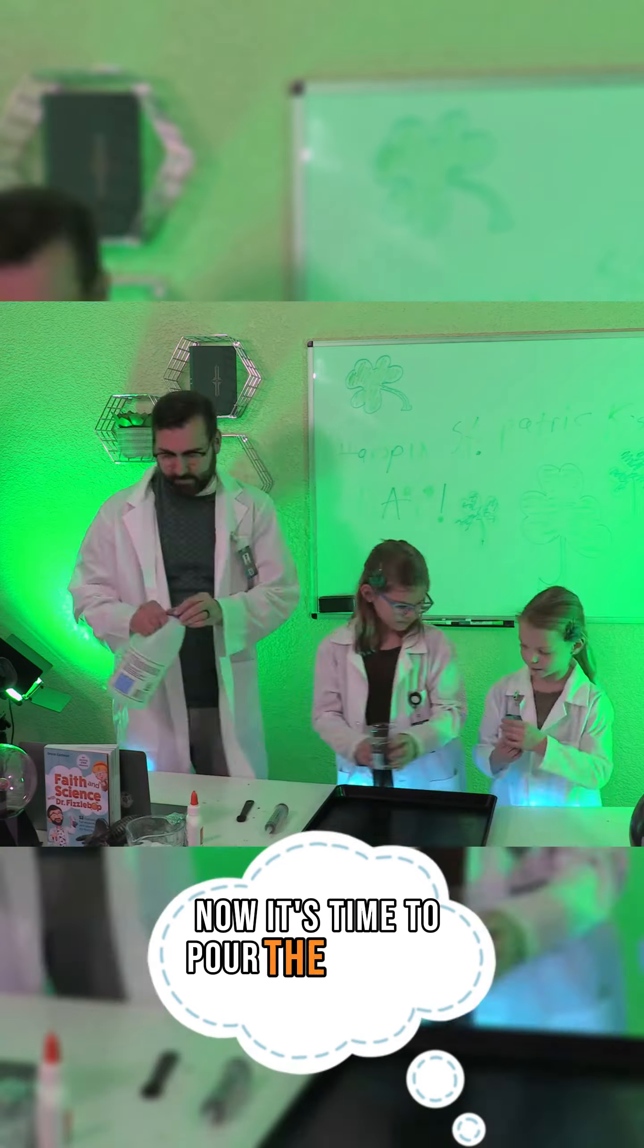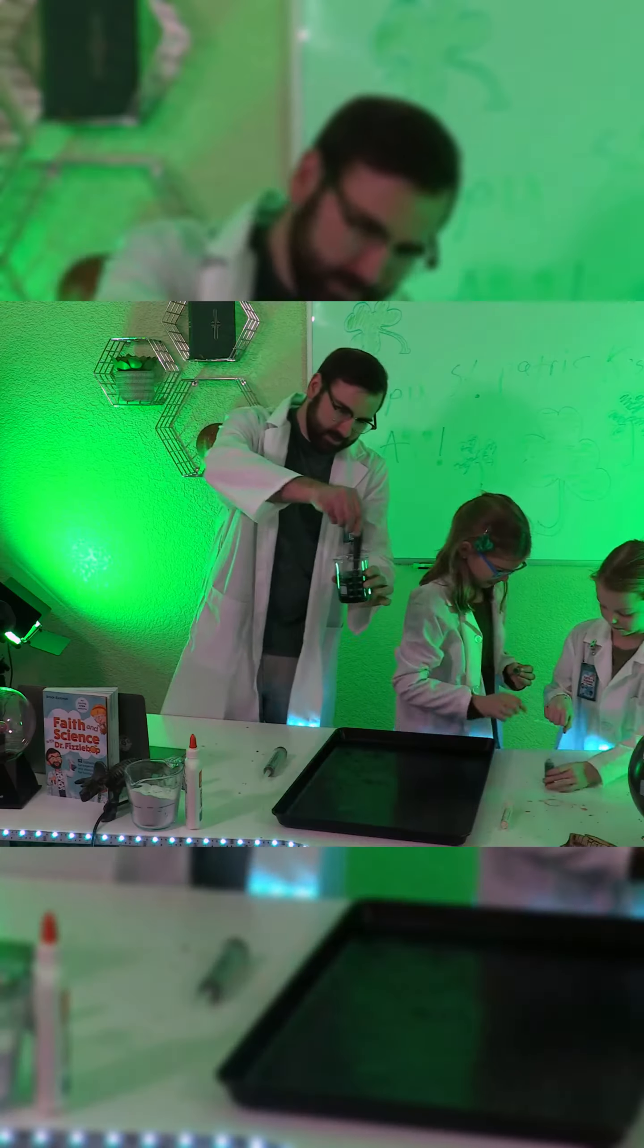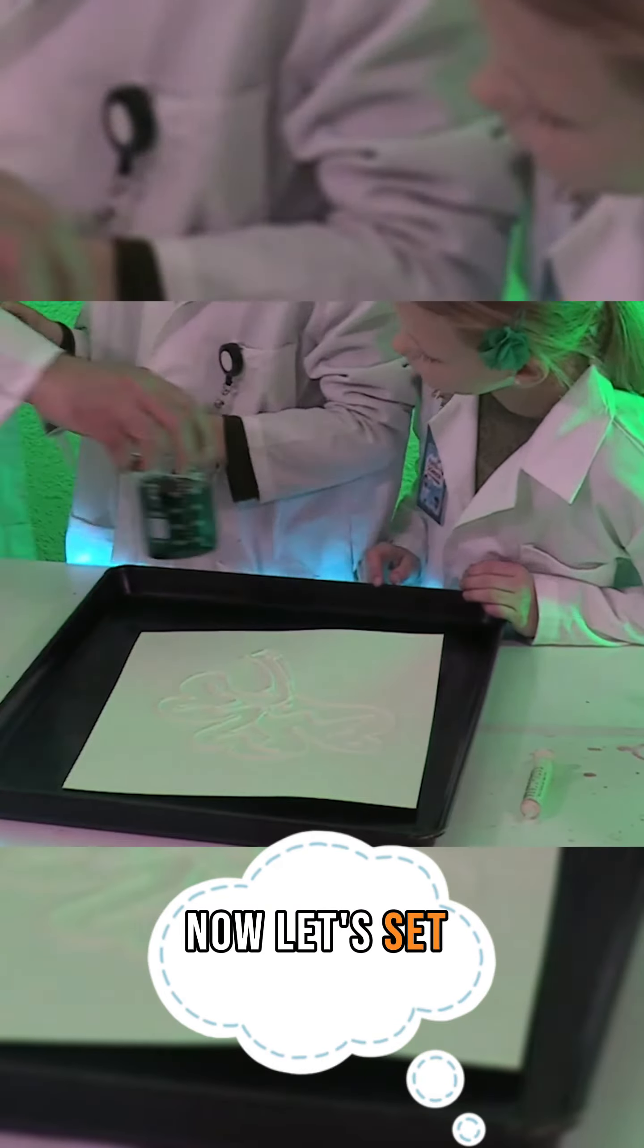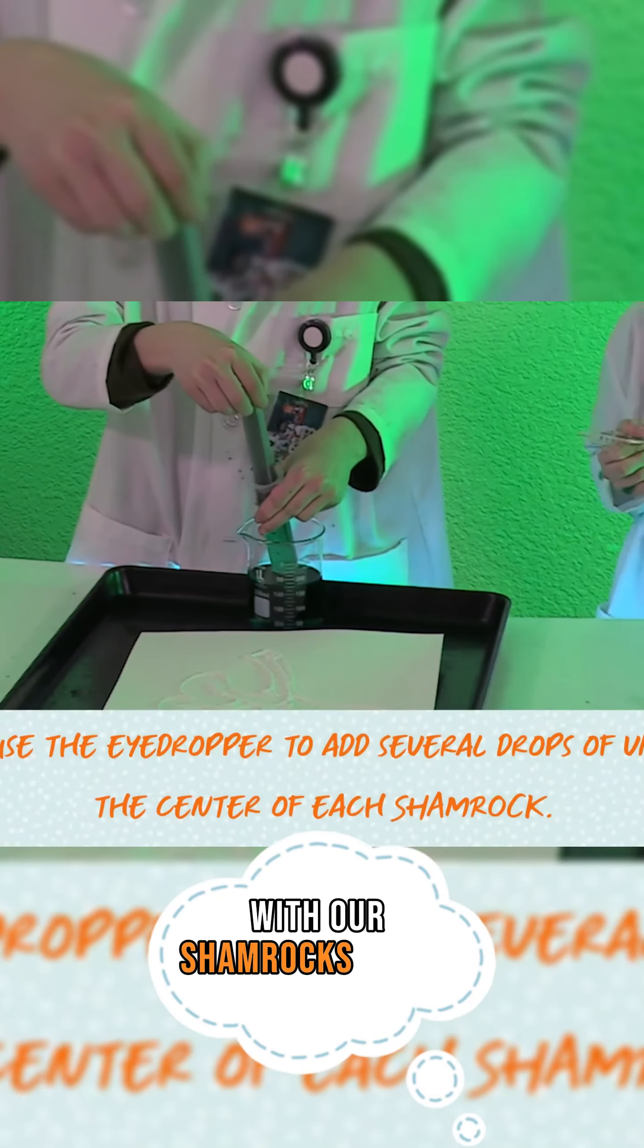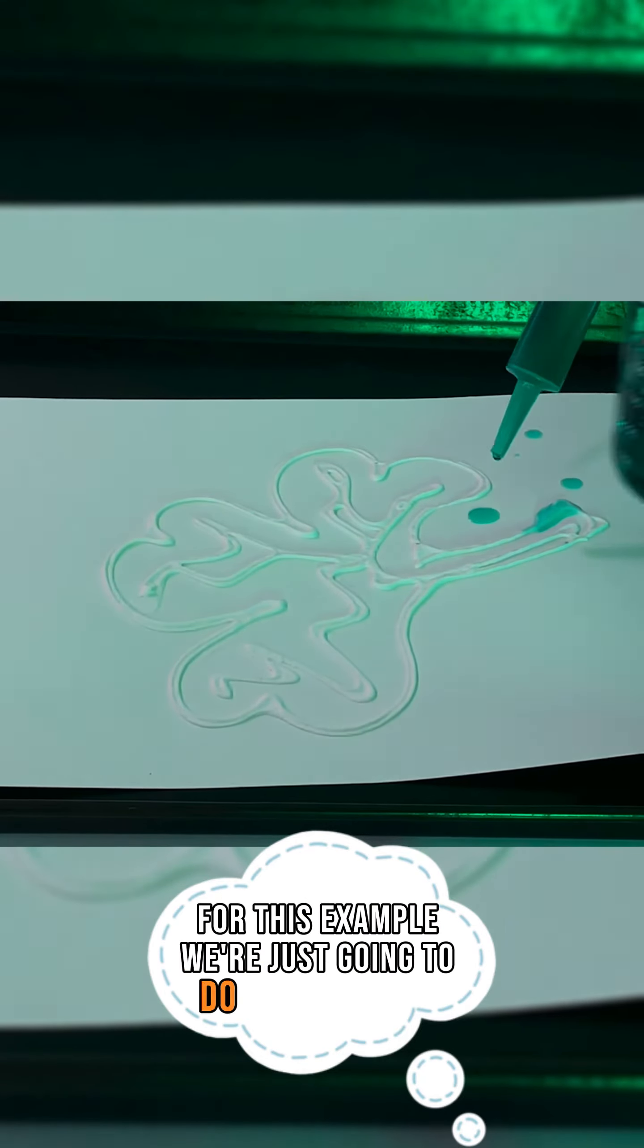Now it's time to pour the vinegar into the jar and add seven drops of food coloring to the vinegar. Let's stir this up. Now let's set the paper with our shamrocks on our baking sheet. For this example, we're just going to do one shamrock.